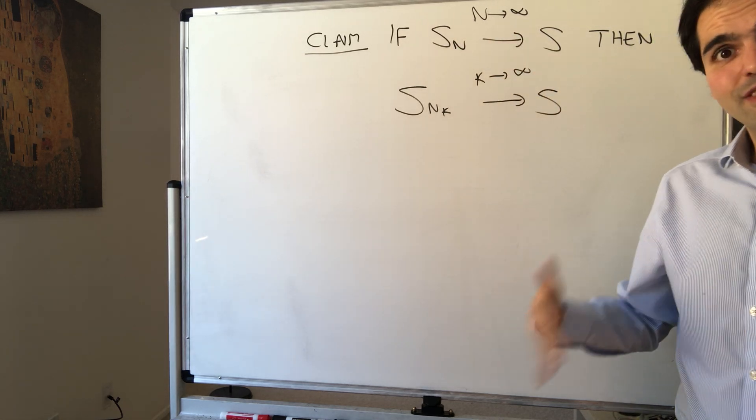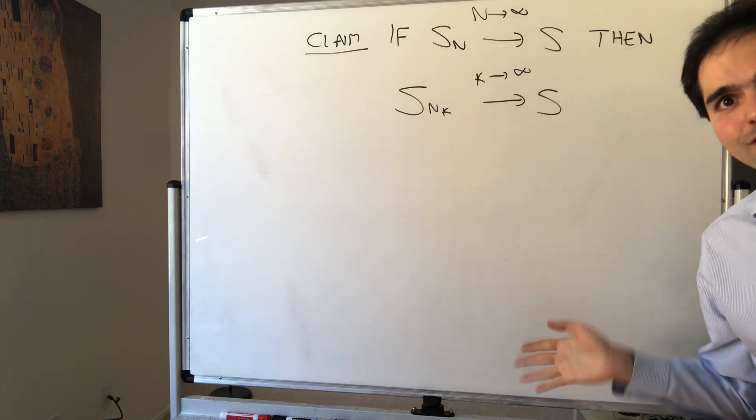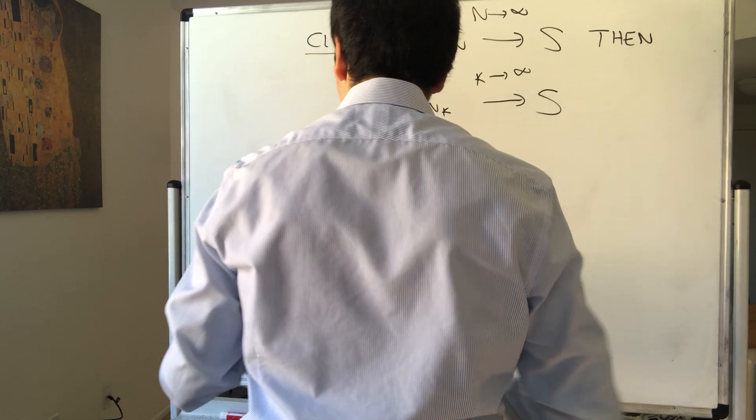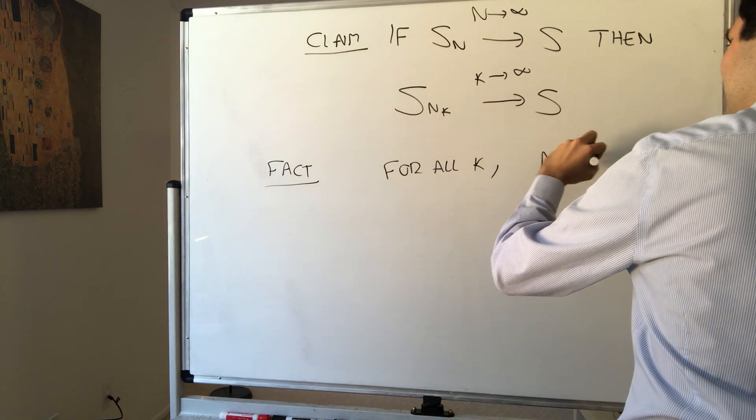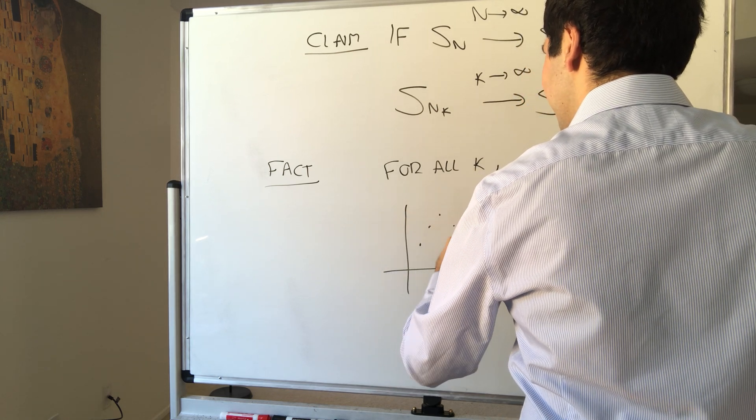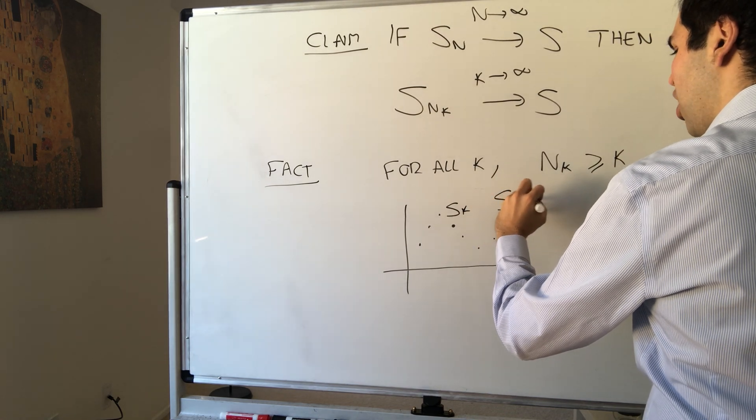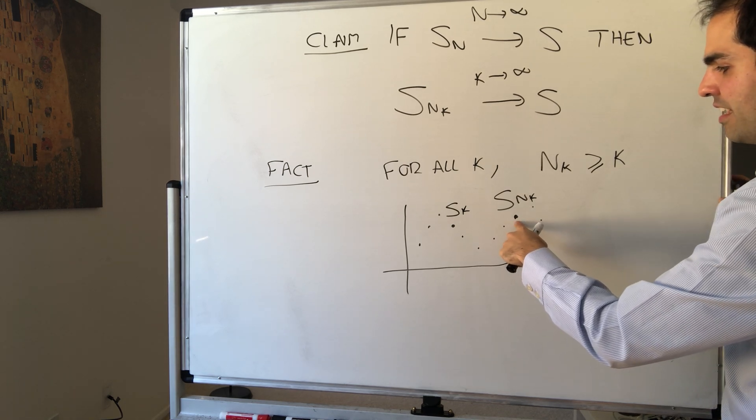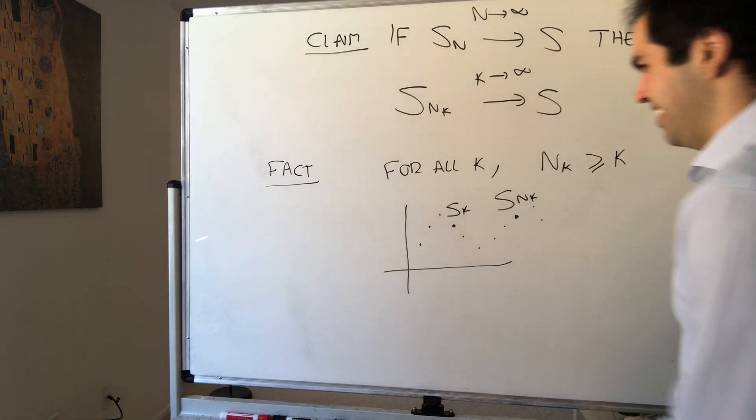Because, basically, if the train itself goes to a certain destination, hopefully the express train will also go to the same destination. Otherwise, it would be a very weird express train. And the proof relies on a little fact, which I hope is kind of obvious to you. But fact, for all k, nk is greater or equal to k. And let me illustrate that. So what is k? k is just the k-th stop of your original train. Snk is the k-th stop of your express train.